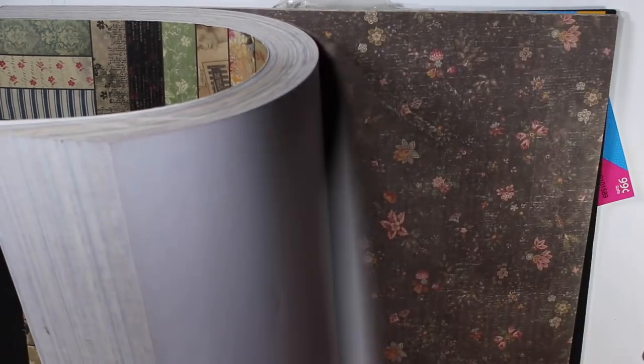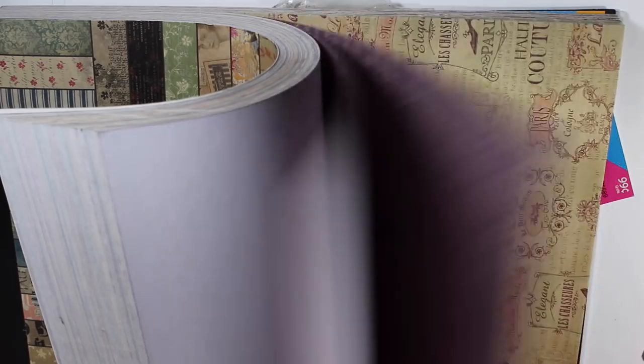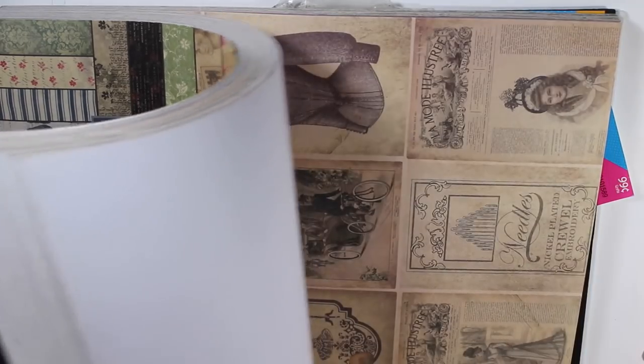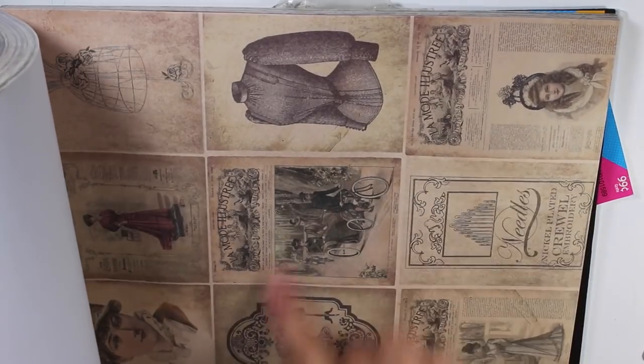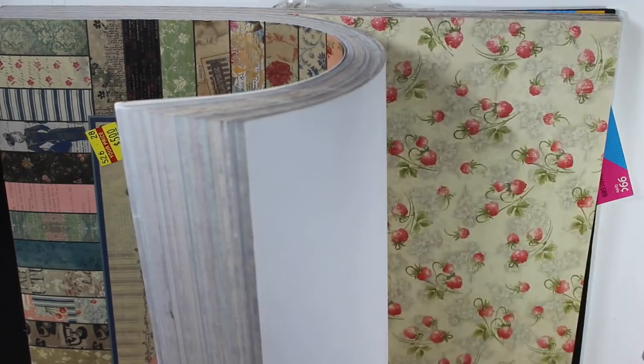For collaging, even fussy cutting out some of this stuff. I'll show you, the purple's pretty. This is really nice. I mean, you can definitely cut this out almost like an ephemera kind of thing. There's three of each sheet.